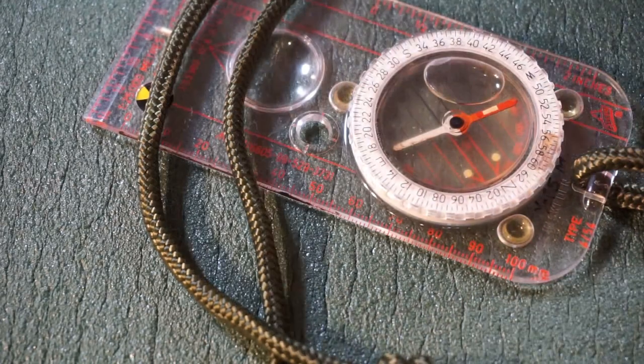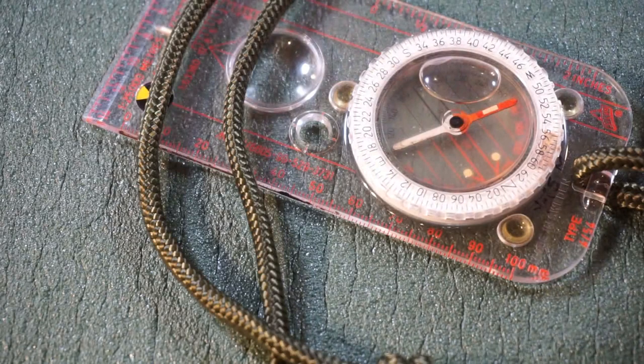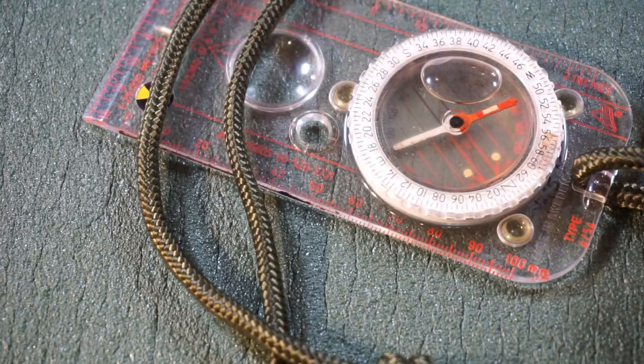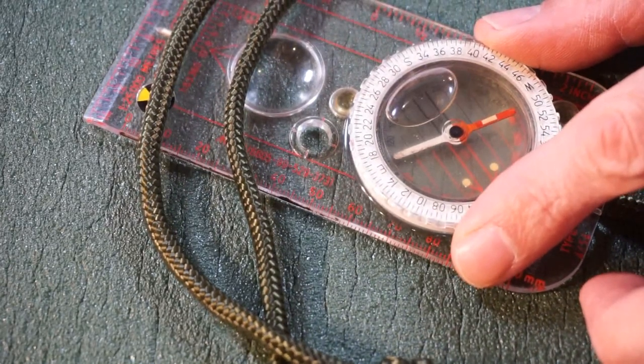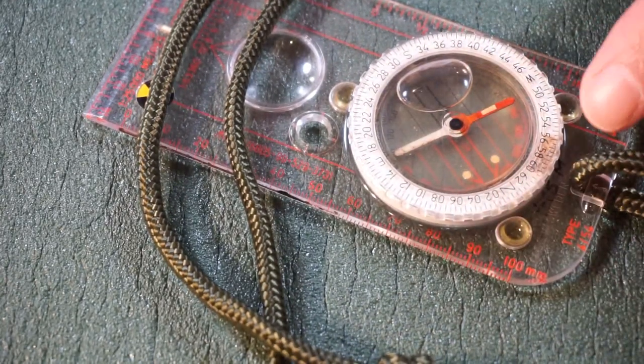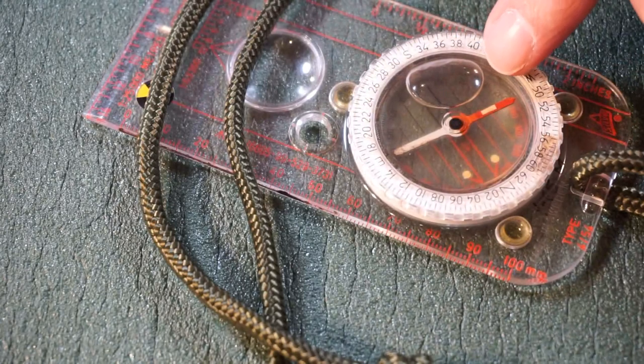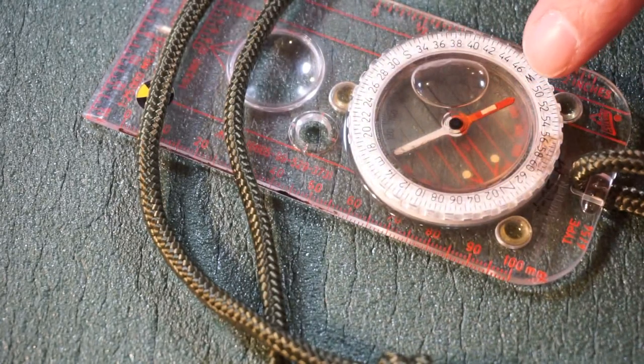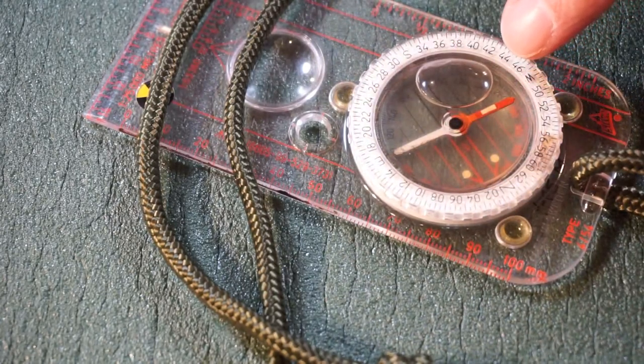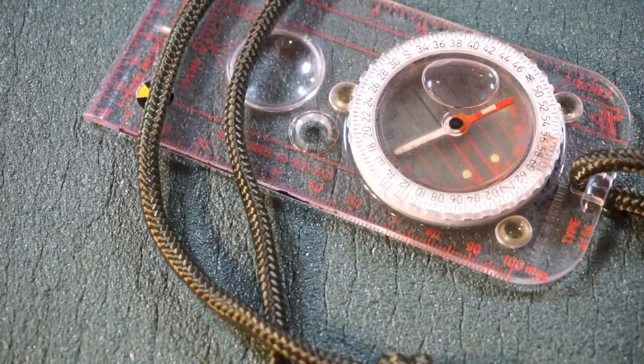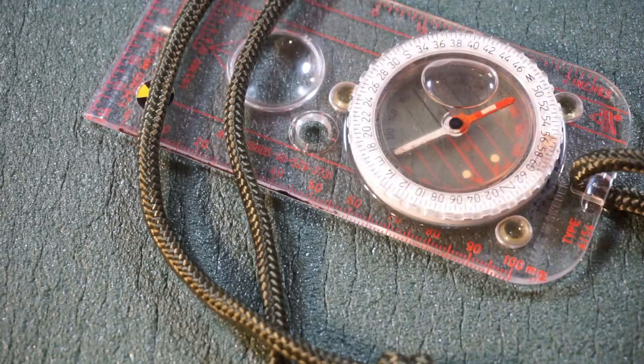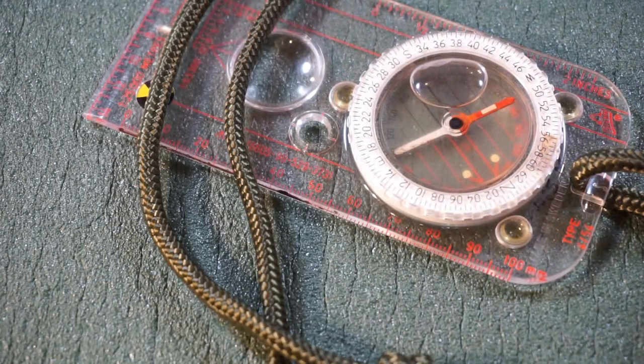There is other folklore out there that says place the compass on a radiator and the bubble will go away. If you're fooled by that, it's your own fault, because what will happen is the liquid in there—I think it's oil-based—will expand, the bubble will get smaller, and you think it's gone away. As soon as it cools down again, the bubble's back. So that does not work.